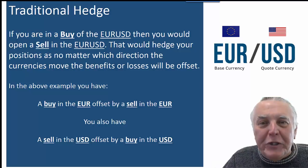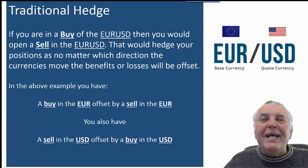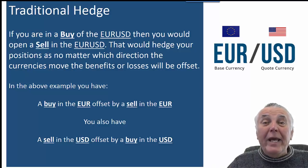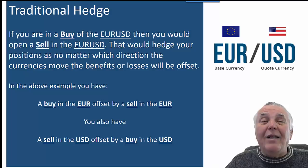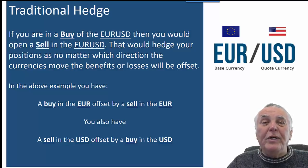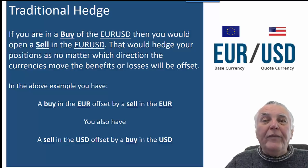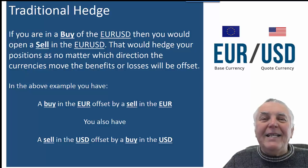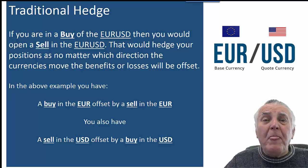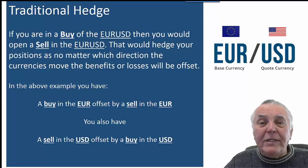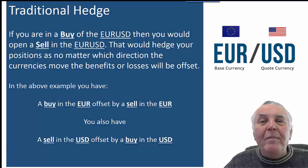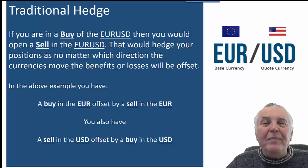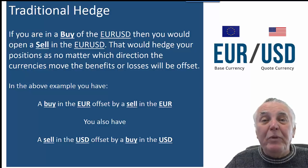Let's take an example of the traditional hedge. Let's say you are buying the Euro USD. To hedge, all you have to do is enter a sell in the Euro USD. That way, no matter where the price of the Euro USD goes, you will not make a loss or profit — you will have hedged your position. Your original position was a buy in the Euro USD, so you were buying the Euro and selling the USD. Then you enter another transaction where you sold the Euro and bought the USD. Because there's a buy and a sell in both currencies, it is a perfect hedge.